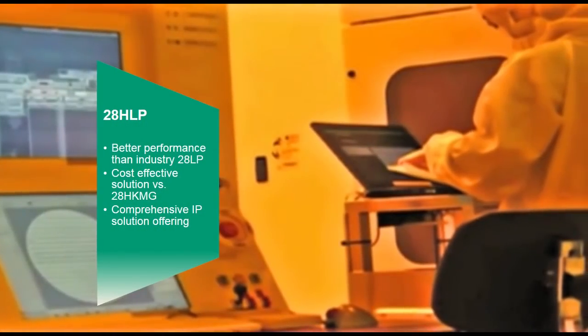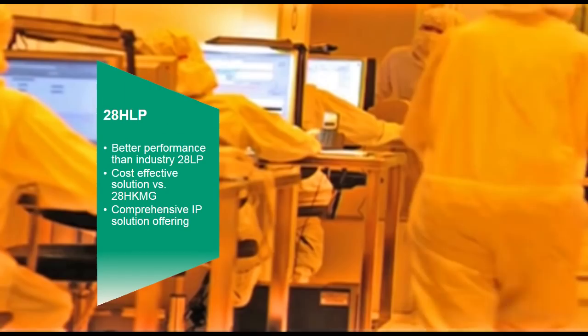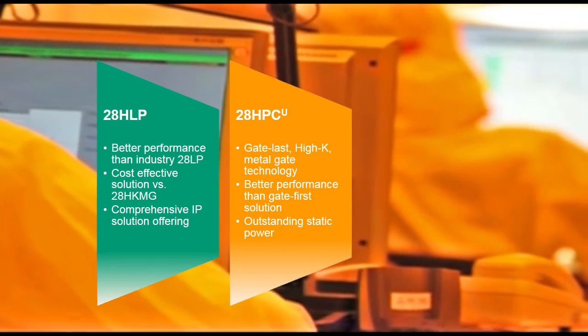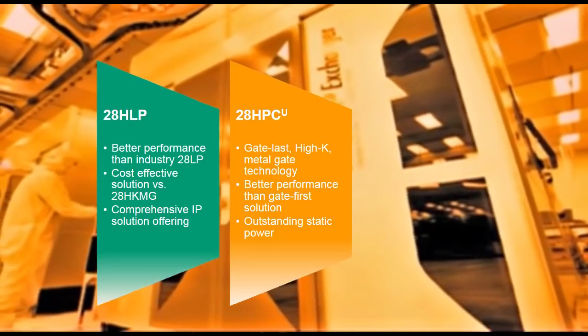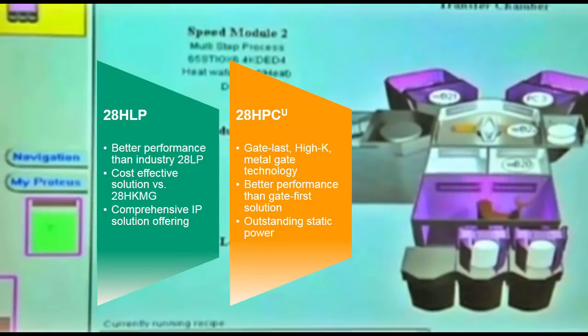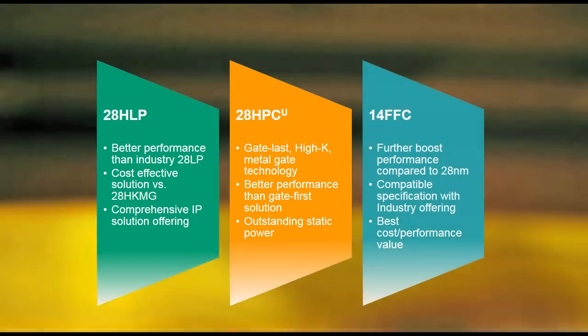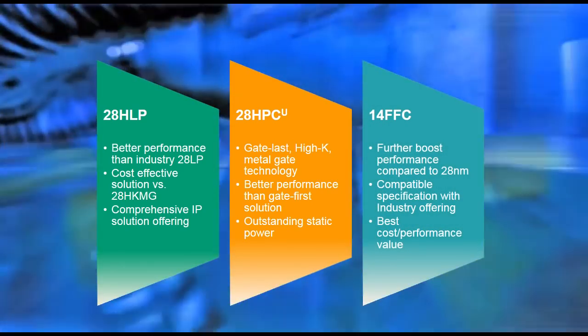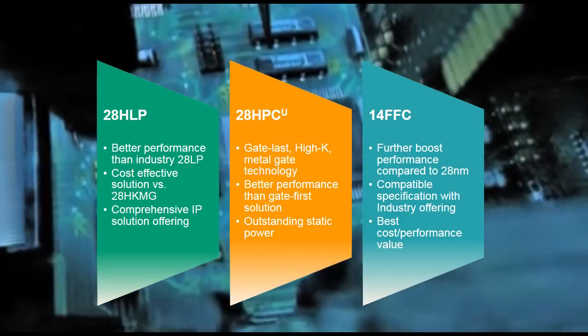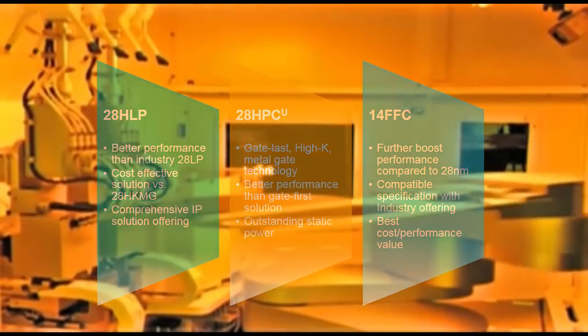28HLP is a polycyon solution that is very cost effective versus a high-K metal gate solution. 28HPCU is a high-K metal gate gate last solution for optimum 28nm performance. 14FFC offers a further performance boost compared to 28nm and the best cost performance value.